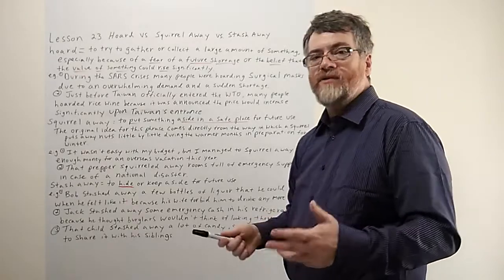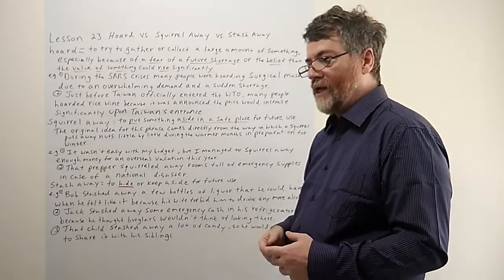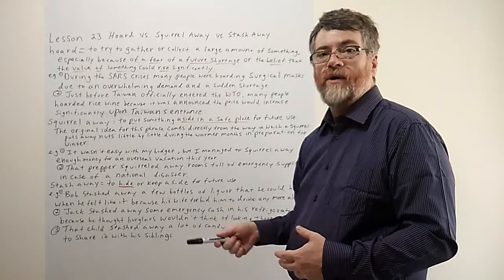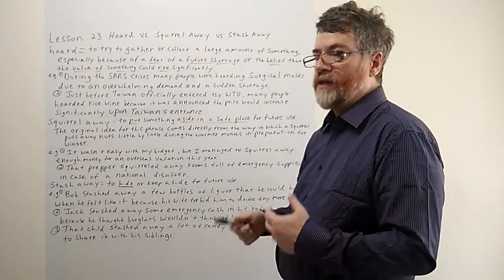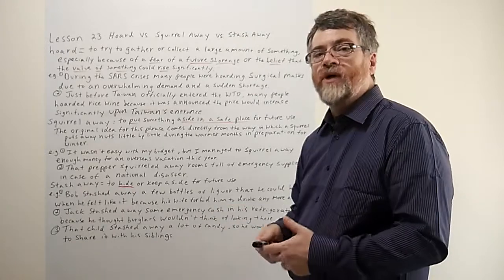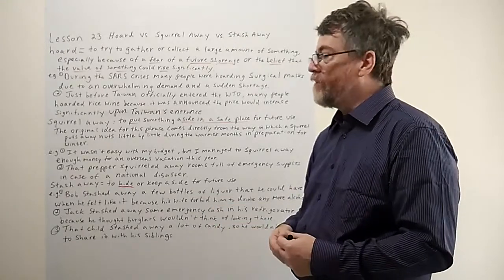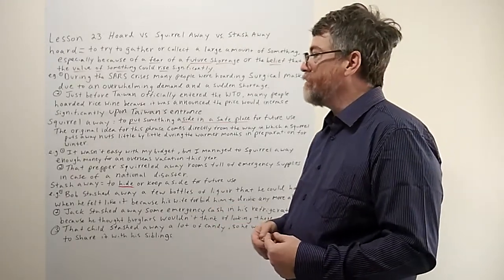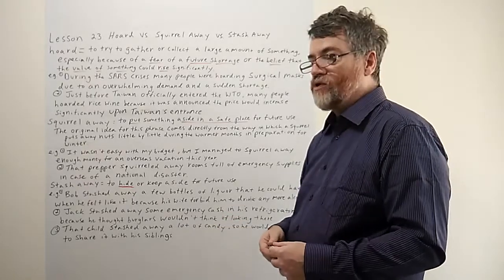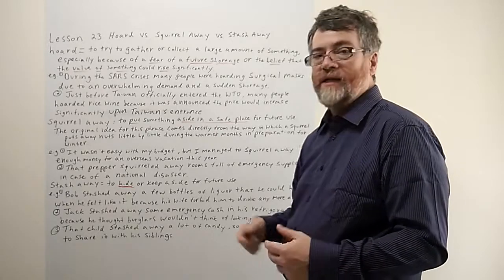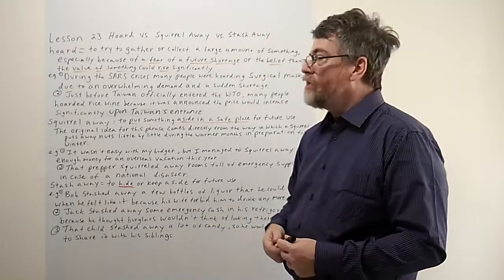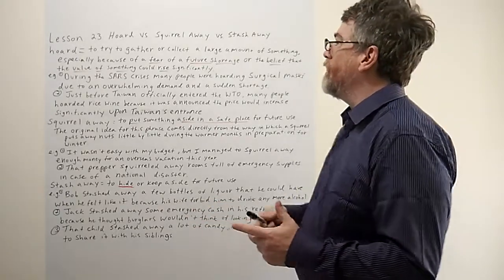The government announced this, people knew in advance, and a lot of people thought, oh my god, the price is going up. I better store up now. I better get a lot of it now so that at least you can get the cheaper price for a longer period of time. And that's what they did. There was a lot of long lines of people trying to buy this rice wine at that time, so there clearly was a lot of hoarding going on.